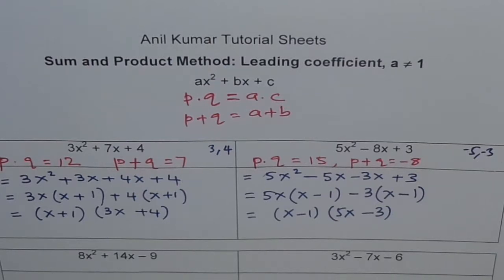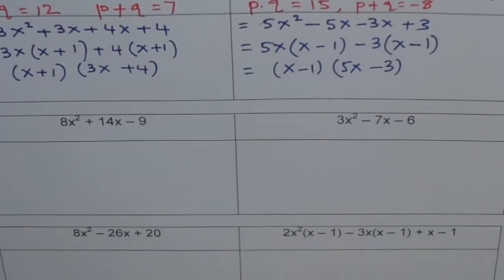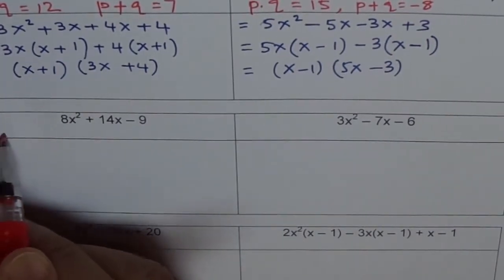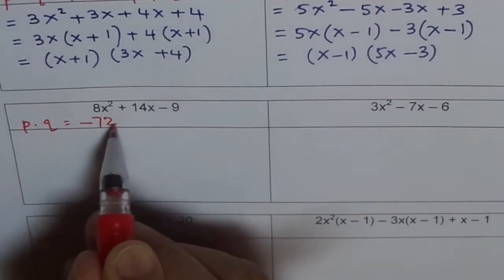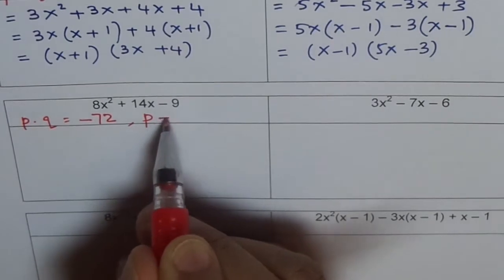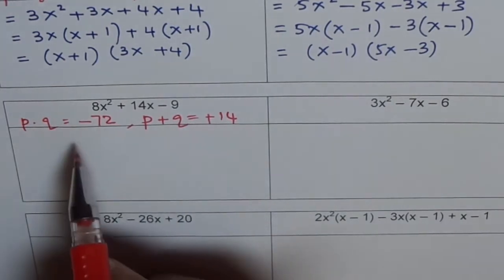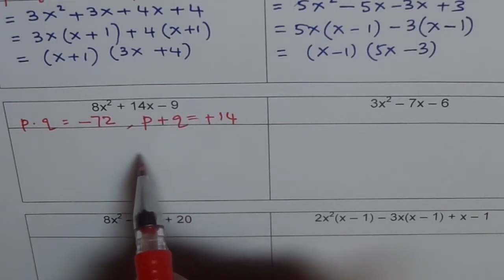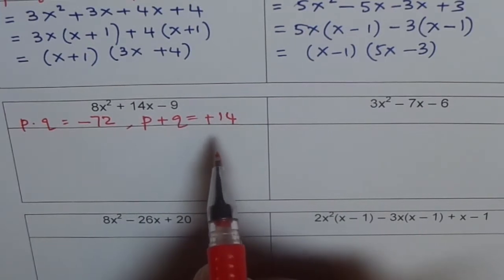Follow the same procedure and do the rest. Here, what should be the product? Product should be 8 times 9, which is 72, but with a negative sign, and p plus q should be plus 14. Because the product is negative, the two numbers are of opposite sign. And since the sum is positive, the bigger number is positive. Look for two numbers whose product is minus 72 and whose sum is 14 — try to do it yourself.